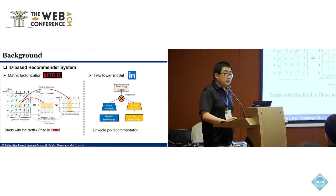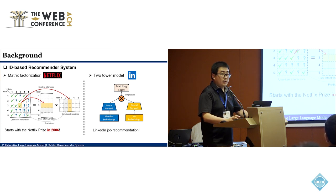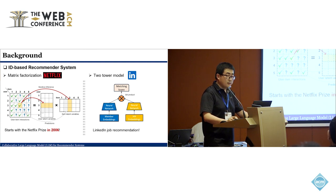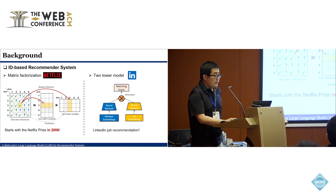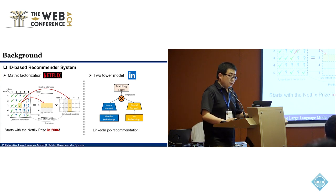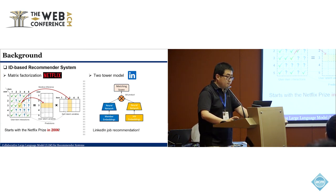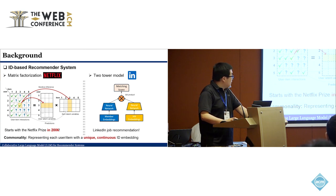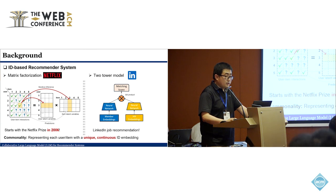In industry, a very popular method is the two-tower model. We have two branches instantiated by neural networks to learn user embeddings and item embeddings. The dot product can then approximate the real interactions. The commonality for both approaches is that they represent each user and item with a unique and continuous ID embedding.